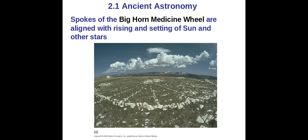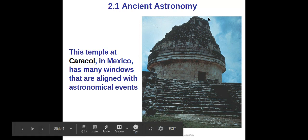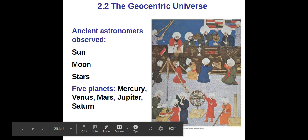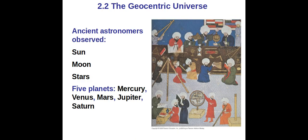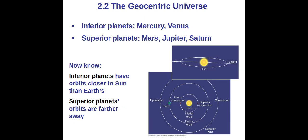This is in Wyoming, the Bighorn Medicine Wheel. This is a temple at Caracol, Mexico. They had many windows that pointed to astronomical events as well. Ancient astronomers observed the sun, moon, stars, and then the five closest planets: Mercury, Venus, Mars, Jupiter, and Saturn. Those are the ones they could see without telescopes. We sometimes refer to the inferior planets as Mercury and Venus because they're closer to the sun, and then the superior planets are the ones that are farther away.